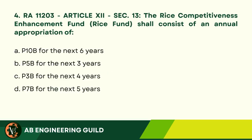Answer: C. RA 10915. Question 4: RA 11203, Article 12, Section 13. The Rice Competitiveness Enhancement Fund (Rice Fund) shall consist of an annual appropriation of: A. 10 billion pesos for the next six years. B. 5 billion pesos for the next three years. C. 3 billion pesos for the next four years. D. 7 billion pesos for the next five years.